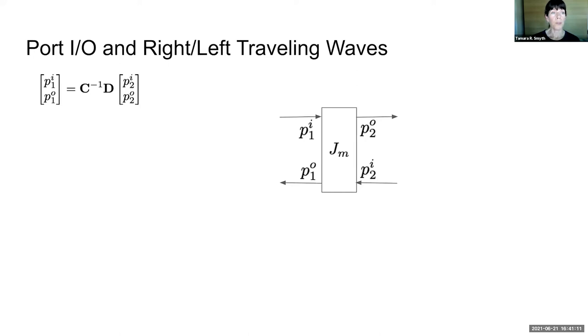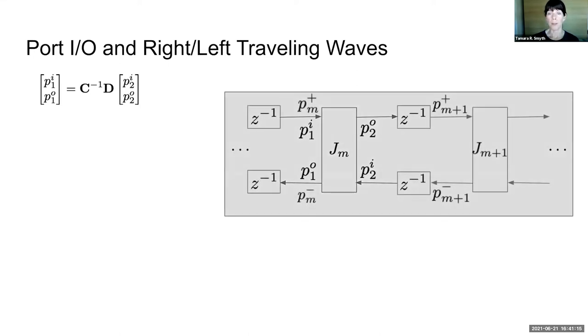The input-output wave components are related to the right and left traveling waves. We can see this by looking at the input-output waves on the left port of junction M, and see that they are equal to the right and left traveling waves in section M.